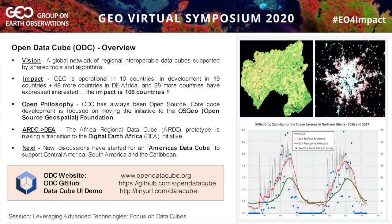From the beginning, our philosophy has always been open source, so the code remains open source and everything is free and open. Our core code that we've developed over time — what we're doing now is moving this into the Open Source Geospatial Foundation, called OSGEO. This is a home for many open source software tools, and we felt it was a logical next move for the Open Data Cube. This will give us more visibility and open us up to a broader community of open source software developers.